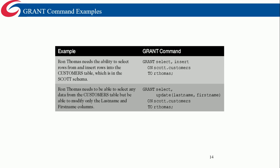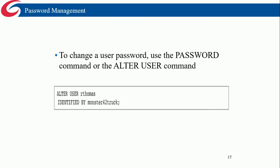Here are some examples of the GRANT command. The first grants SELECT and INSERT on the customers table to a user called R_Thomas. The second grants SELECT and UPDATE — but only UPDATE on last_name and first_name columns — on the customers table to R_Thomas. So R_Thomas can SELECT and INSERT, but can only UPDATE those two specific columns. To change a user's password, use the ALTER USER command: ALTER USER username IDENTIFIED BY new_password.